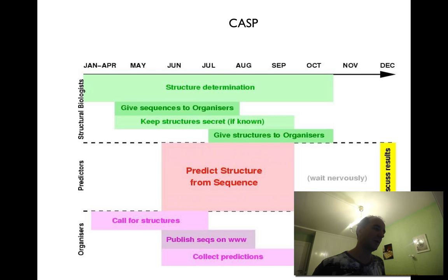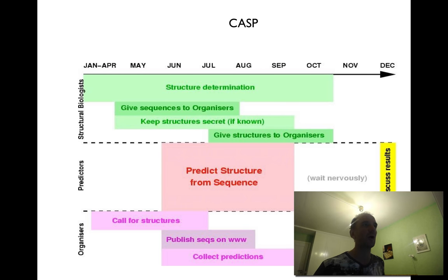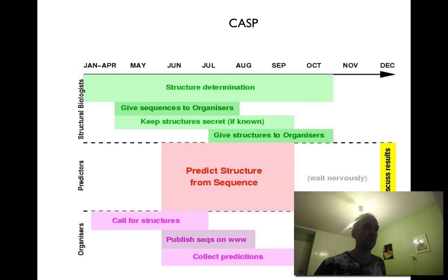Normally the circuit works like this. In the beginning of the year, the organizers ask the experimental community for structures that are going to be solved soon. They give the sequences to the organizers and keep the structures secret. Then the organizers give the sequences to the community and they predict the structure any way they want.